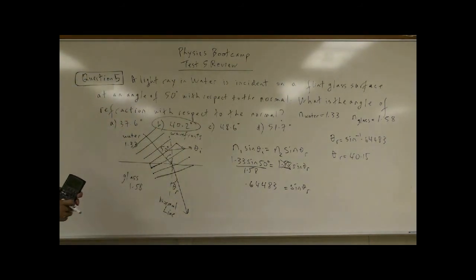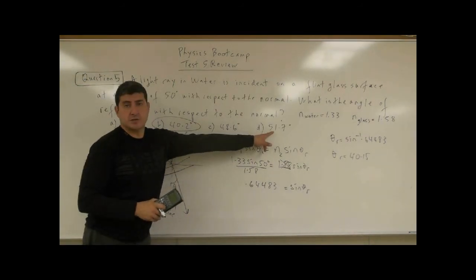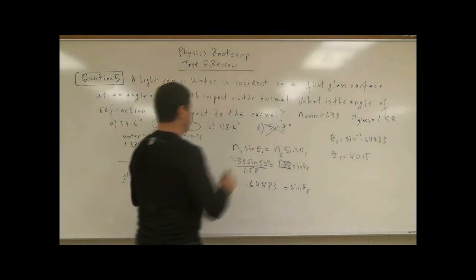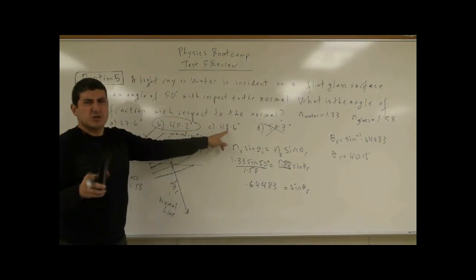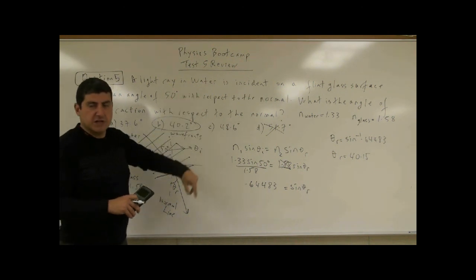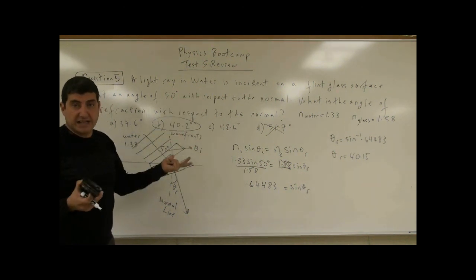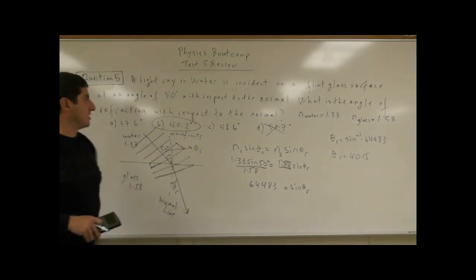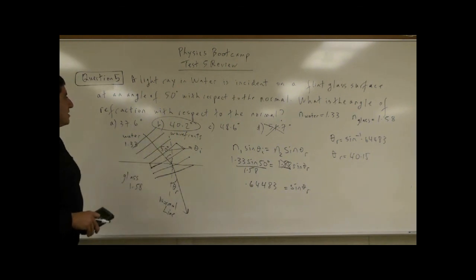Now, we could have ruled out 51 immediately because we knew the answer had to be less than 50. So the answer can't be 51. 48 looks like it's too close to 50. So you can kind of rule that out, but not exactly. So it is a possible answer. But 51, definitely you could rule it out right away. So the answer for this case was B. Thank you.